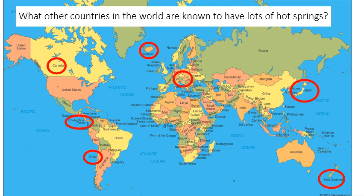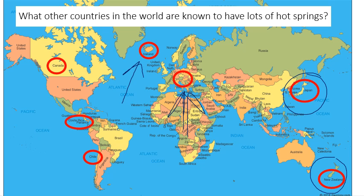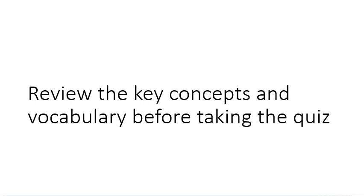What other countries are known for lots of hot springs? The US has about 1,700. Canada has a lot — close to the US with many mountains and volcanoes. Costa Rica and Chile in the Americas are known for them. Iceland has a lot of hot springs. Japan, New Zealand, and in Europe, Hungary are also notable. These are some countries known for having significant hot springs.